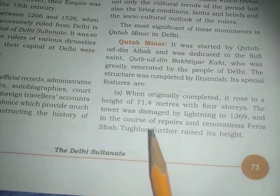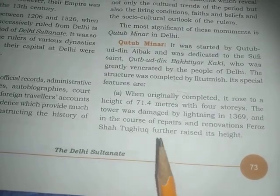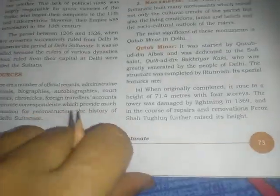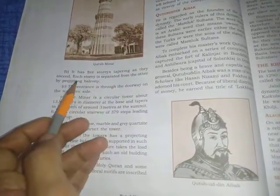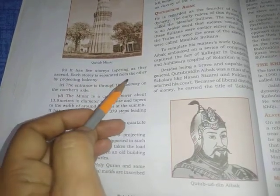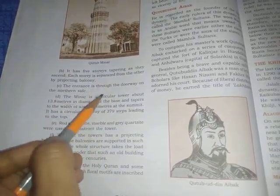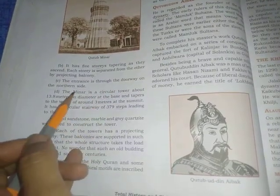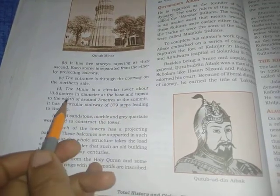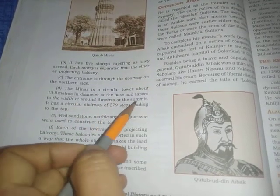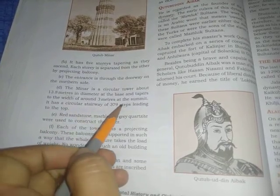In the course of repair and renovation, Firoz Shah Tughluq further raised its height. Originally four stories, after reconstruction its height was increased. You can also see in the picture that it now has five stories, tapering as they ascend. Each story is separated from the other by a projecting balcony. The entrance is through a doorway on the north side. The minar is a circular tower about 13.8 meters in diameter at the base, tapering to around 3 meters at the summit.